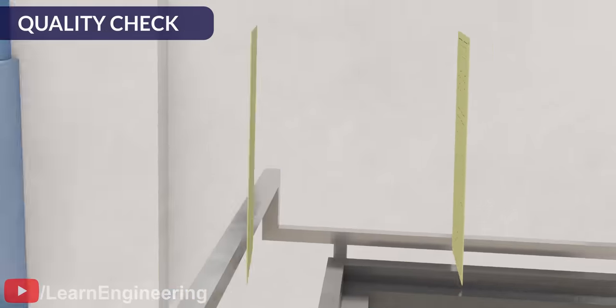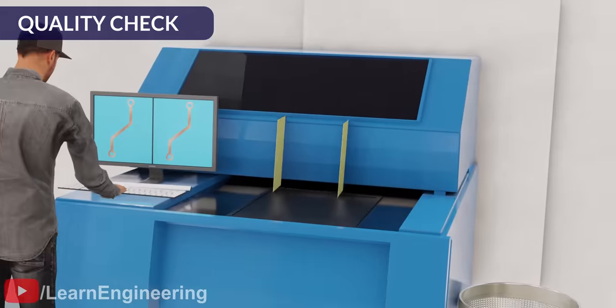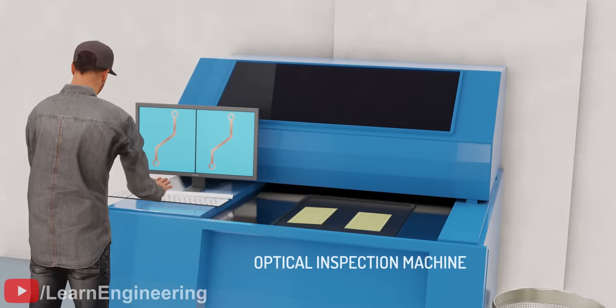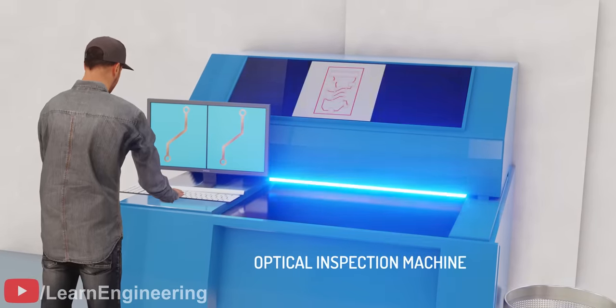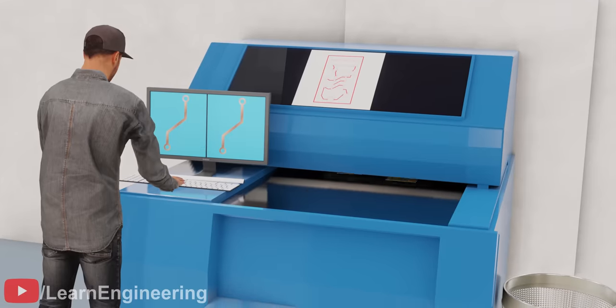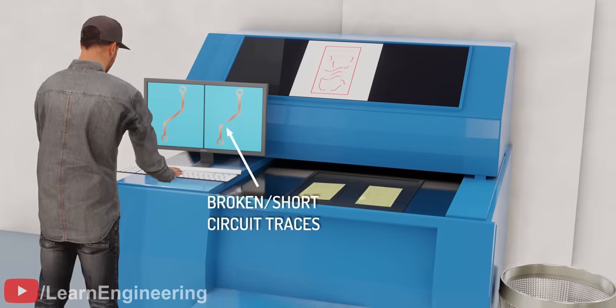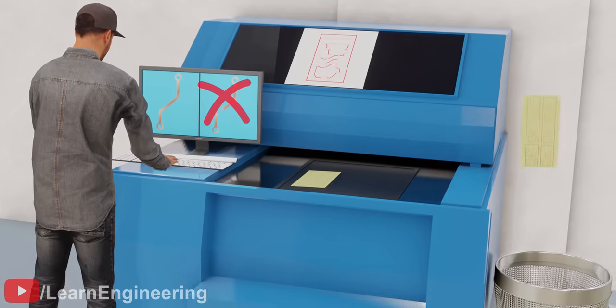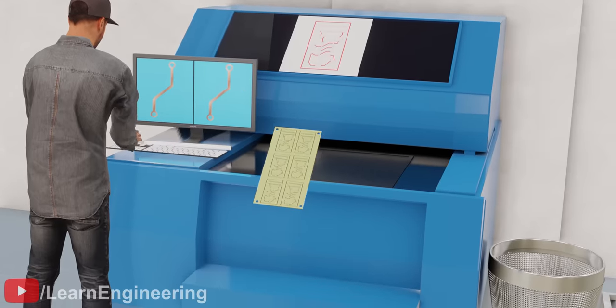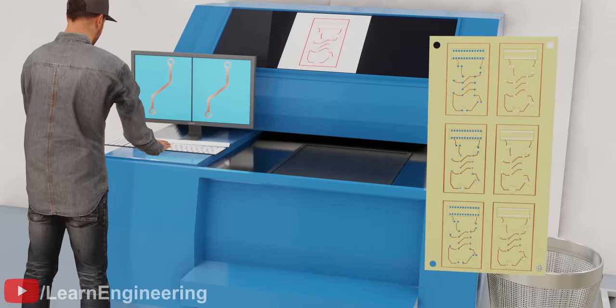To check the quality of the copper traces, the boards go for an inspection. An operator with an optical inspection machine checks the quality of printed boards by taking pictures of them and comparing them with the design files. The machine checks for broken or short-circuited traces, and the PCBs with damaged short-circuited traces are rejected. If everything is good, then boards are moved to the next step.